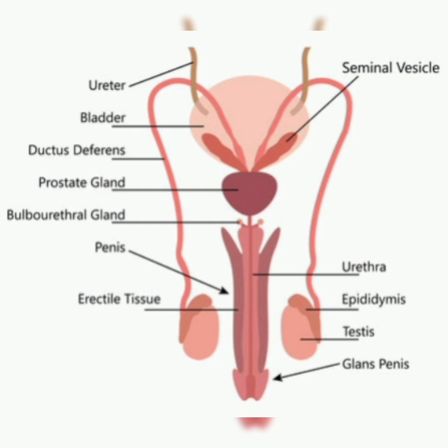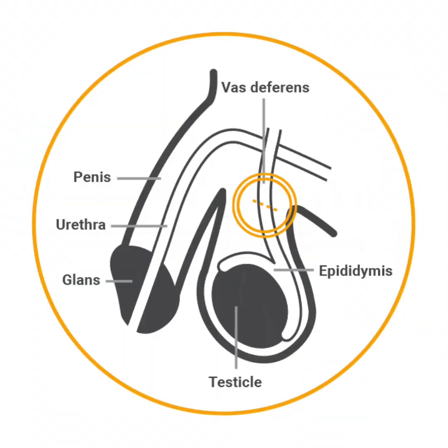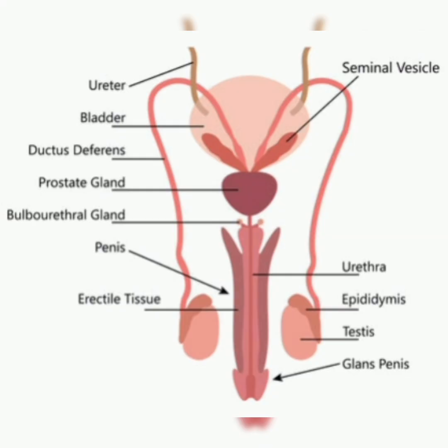Now we discuss the internal components of the male reproductive system. These consist of the vas deferens, ejaculatory ducts, urethra, seminal vesicles, prostate gland, and bulbourethral glands. The vas deferens is a long muscular tube that transports mature sperm from the epididymis to the urethra for ejaculation. The ejaculatory ducts are formed by the junction of each vas deferens and the seminal vesicle duct; they pass through the prostate and add fluids to the semen before emptying into the urethra.